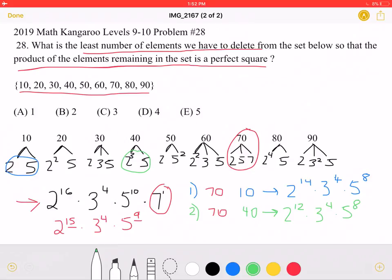Another way we can end up with a perfect square is by removing 70 and then removing 90. 90 is 2 times 3 to the 2nd times 5, so we would have 2 to the 14th times 3 to the 2nd times 5 to the 8th. All even exponents, so that is a perfect square.